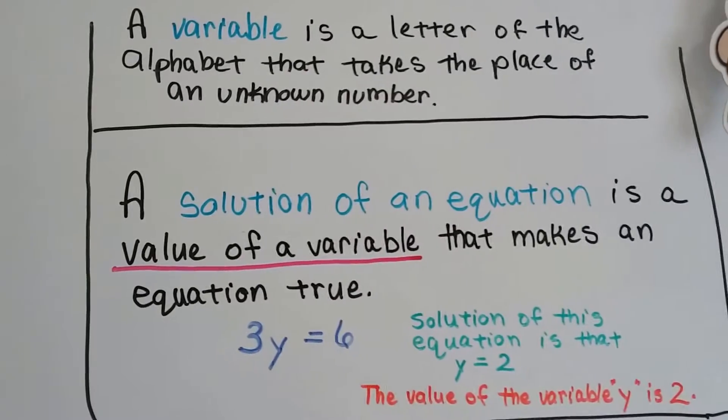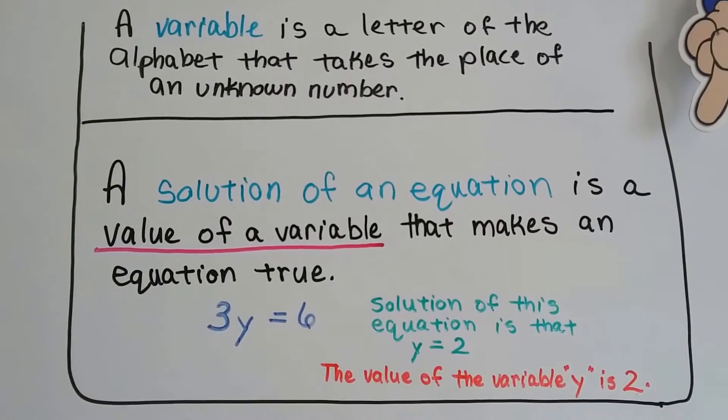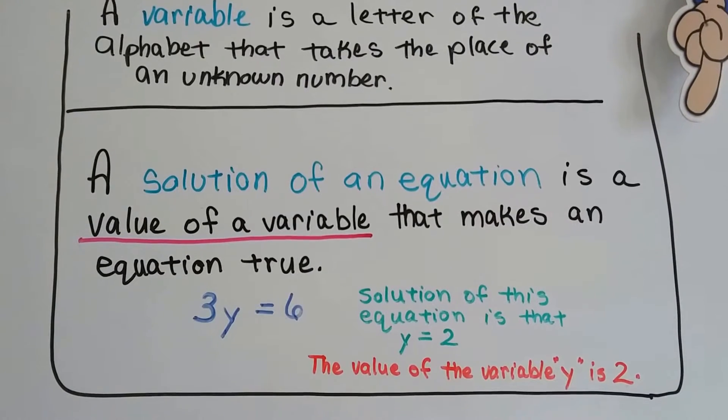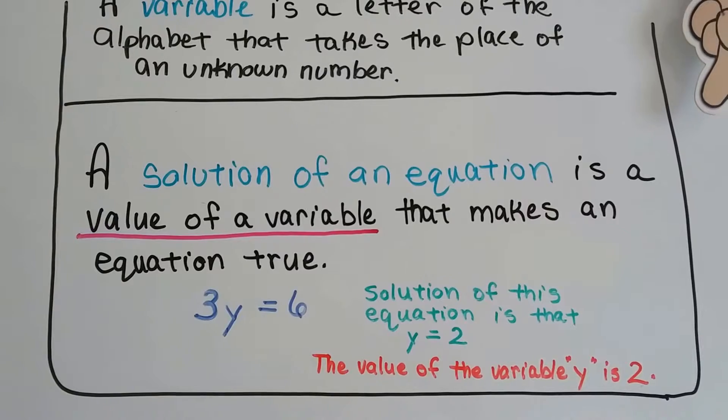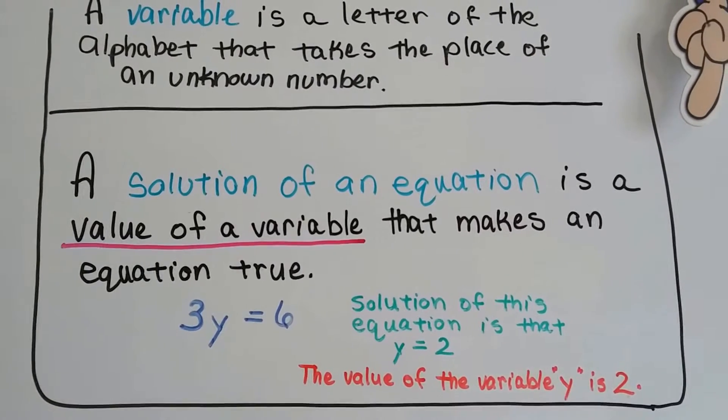So remember, a variable is a letter of the alphabet that takes the place of an unknown number. And a solution of an equation is the value of the variable that makes the equation true. So to find y, we want to find a number that will make the equation 3y equals 6 true. 2 will make it true, so the value of the variable y is 2.